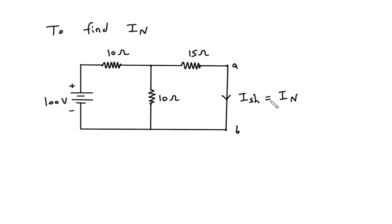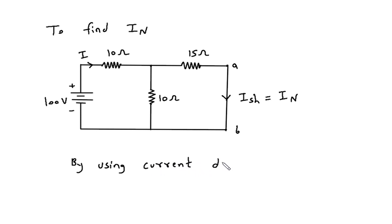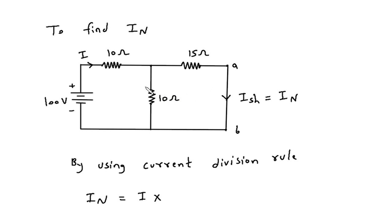To find In, we can use the current division rule. Let's say this is total current I. By using the current division rule, In is equal to total current I multiplied by the opposite branch resistance. The opposite or parallel branch to this 15 ohm is this 10 ohm. So, 10 ohm divided by 10 plus this 15. To find In, we have to find this total current I.